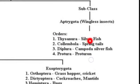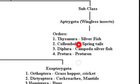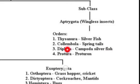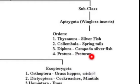The first order is Thysanura, which includes silverfish. The example of this Thysanura order is silverfish. Collembola includes springtails. Diplura has Campodea. And lastly, Protura is there, which includes Proturans.